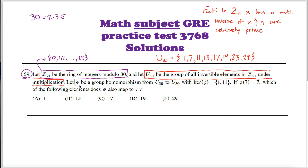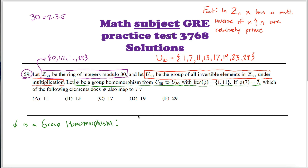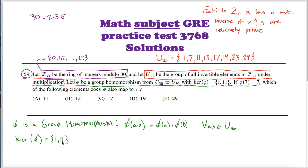Now what we want to do is define a group homomorphism phi from this group to itself, where the kernel of phi contains 1 and 11, and phi(7) = 7. Because phi is a group homomorphism and the operation is multiplication, phi(a·b) = phi(a)·phi(b) for all a, b in U30. Since the kernel of phi contains 1 and 11, phi maps both 1 and 11 to the identity element — which is 1 under multiplication. So phi(1) = 1 and phi(11) = 1.